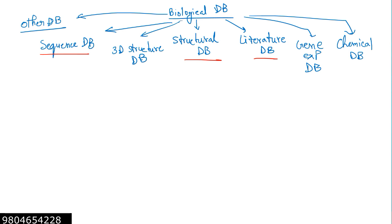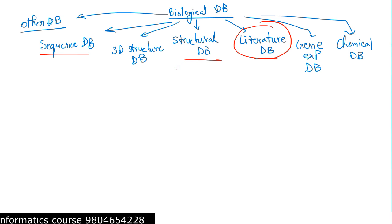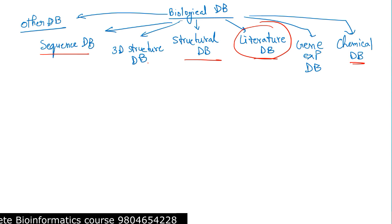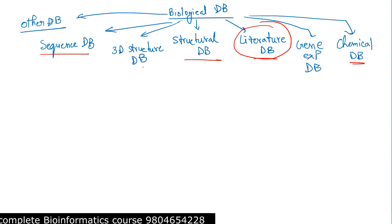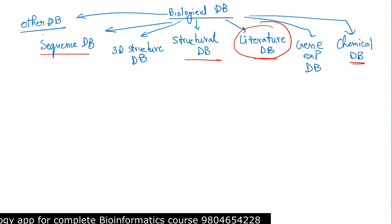The most common types a life sciences researcher will need are the literature database, sequence database, and structural database. If you are working with molecular techniques or proteins or macromolecules, these must be accessible. Chemical databases are also useful, and the use of all these databases is going to increase as data continues to grow.